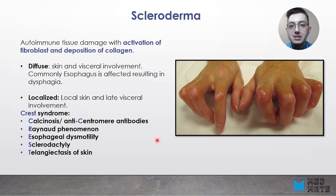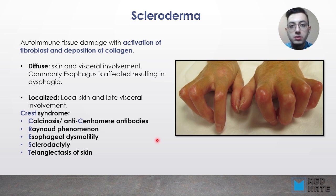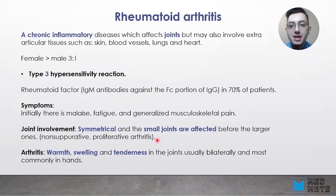The final component of CREST is Telangiectasia of the skin, which is basically dilatation of the superficial vasculature of the skin. Esophageal dysmotility occurs because peristalsis is impaired in scleroderma — both localized and diffuse — leading to difficulty swallowing food.